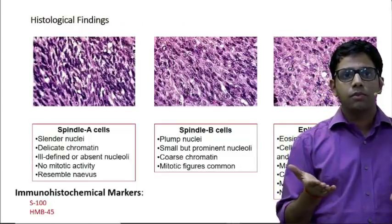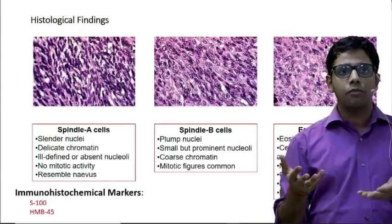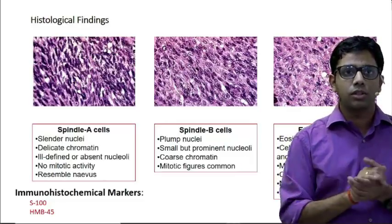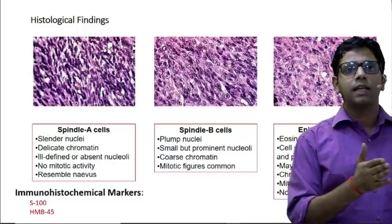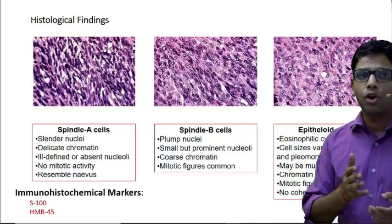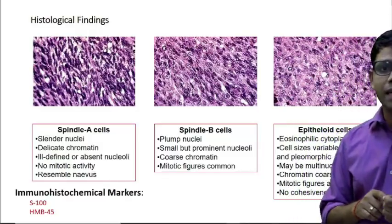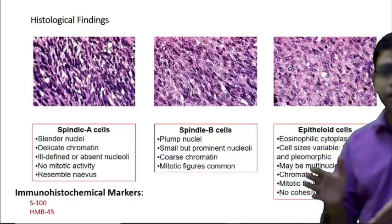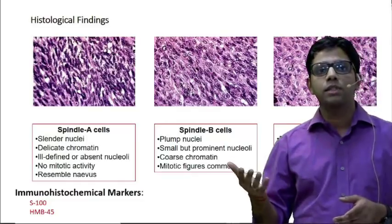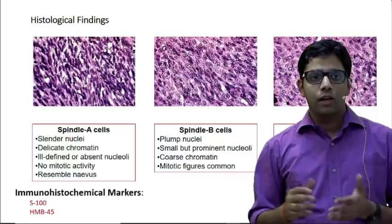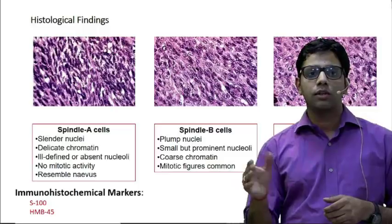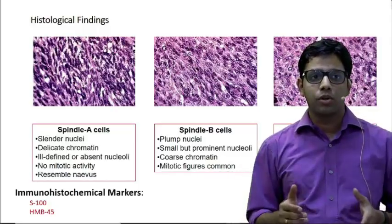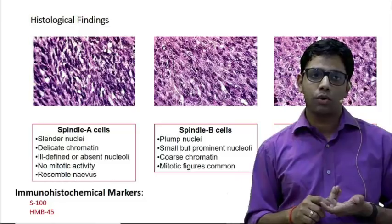After enucleation, the specimen is sent to the pathological lab to determine prognosis. There are basically three types of choroidal melanoma: spindle A, spindle B, and epithelioid. Epithelioid tumors have the poorest prognosis. Immunohistochemical markers are also done to confirm melanoma — HMB-45 and S100 are two important markers.